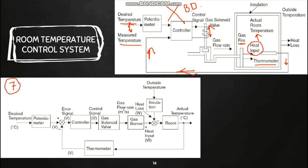The simplified block diagram identifies all seven elements — the rule of seven. The first is the input: the desired temperature via the potentiometer. Second is the controller. Third is the control signal implemented by the gas solenoid valve and gas burner together. Fourth is the plant: the room. Fifth is the controlled variable: the actual room temperature. Sixth is the feedback element: the thermometer. Seventh are the disturbances: outside temperature and heat losses together constitute the disturbance. These are the seven elements important in any control system block diagram.